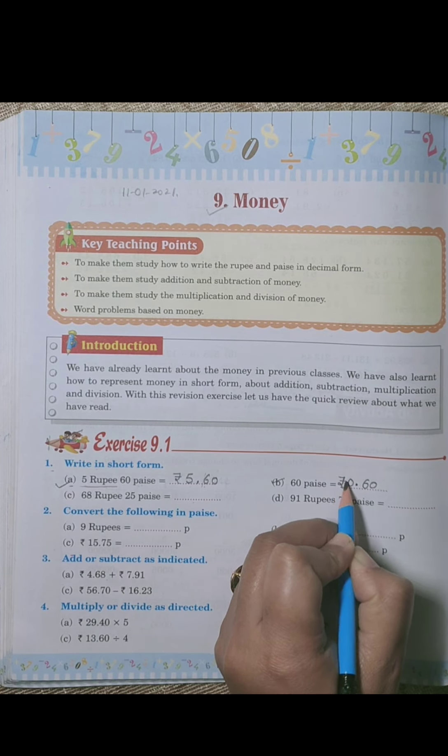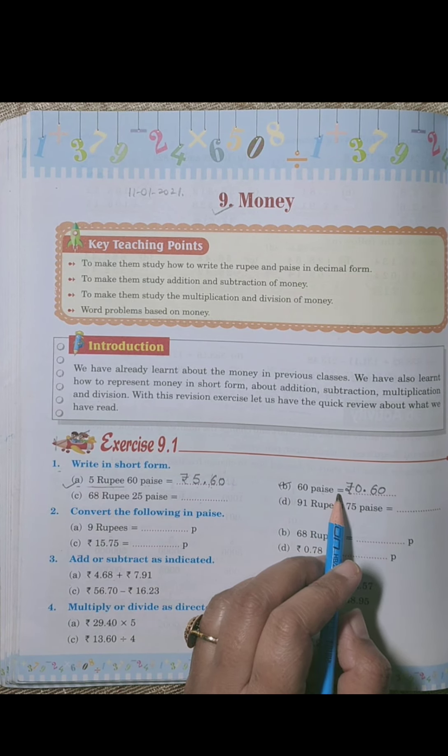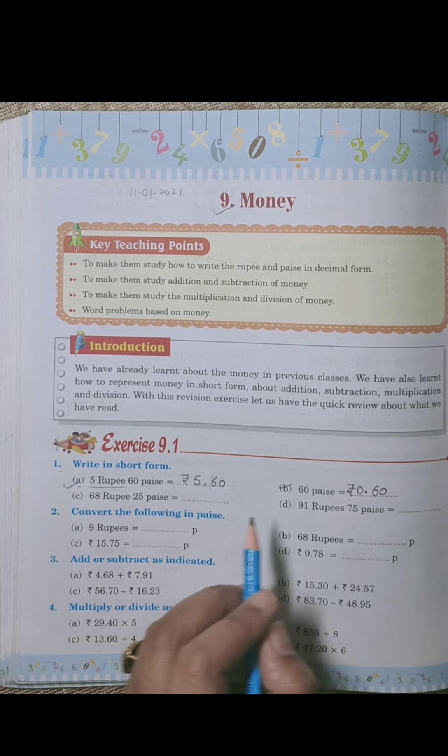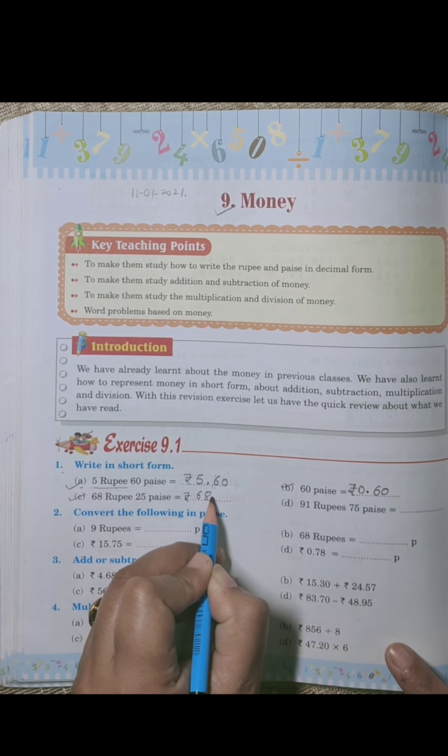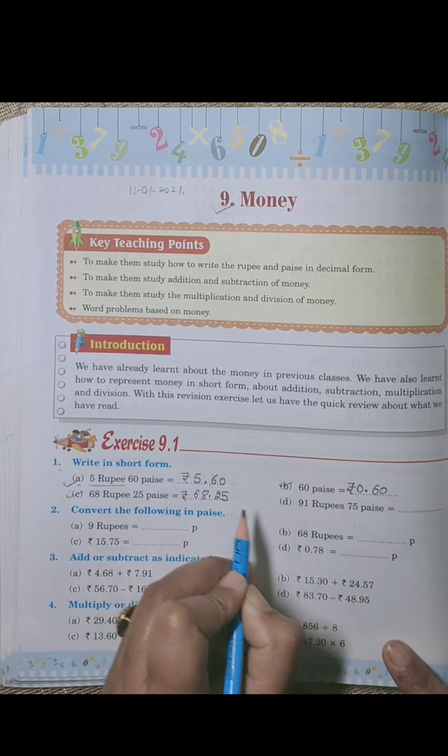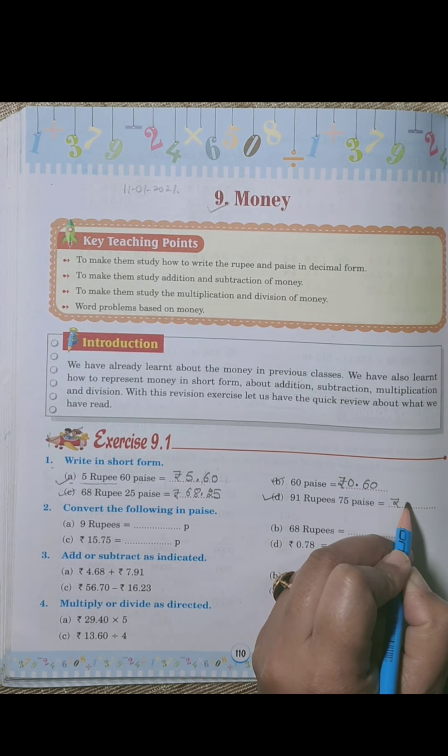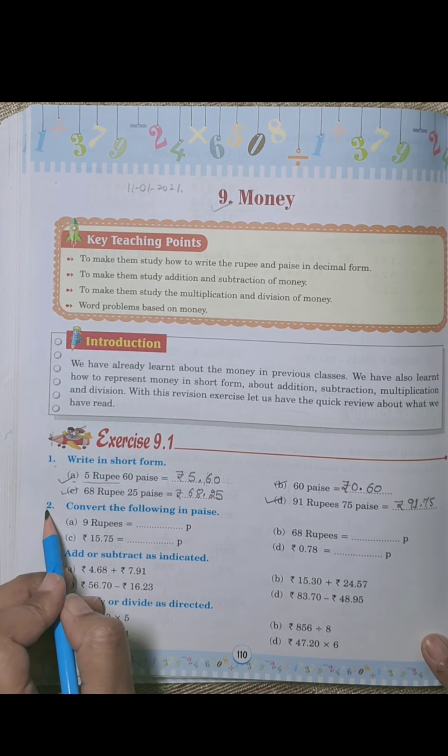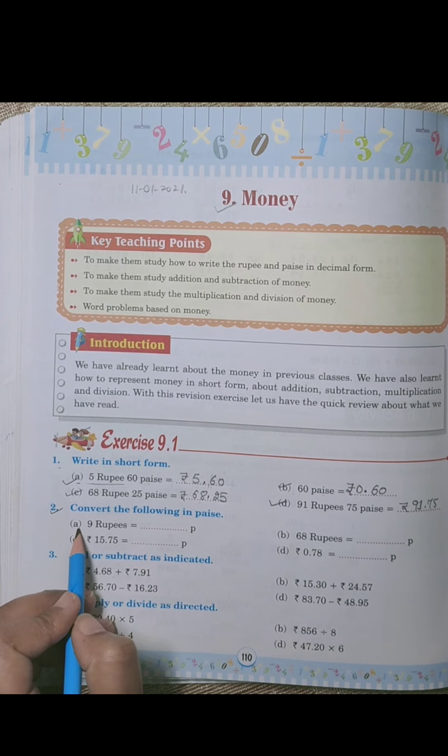We will put the rupee sign. Paise is already there, but when we convert this to rupees we divide by hundred and can note it down. Part c: 68 rupees 25 paise is 68.25, right? Part d: 91 rupees 75 paise is rupees 91.75.